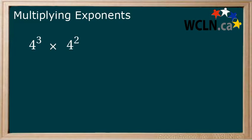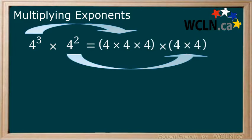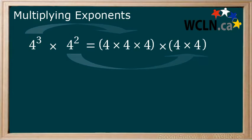First, take each term and write it out the long way. Next, we have a long line of fours being multiplied. Because it is all multiplication, we can drop the brackets.